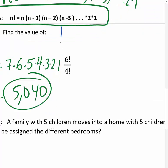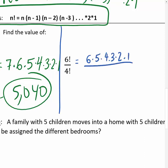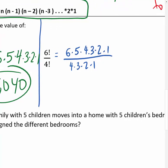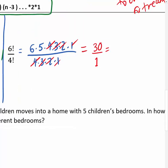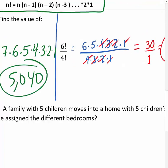Let's try dividing two factorials. 6 factorial over 4 factorial: that's (6 × 5 × 4 × 3 × 2 × 1) divided by (4 × 3 × 2 × 1). The 4s, 3s, 2s, and 1s all cancel out, so you're just left with 6 × 5 on top and 1 on the bottom. Since this isn't a probability, we reduce to a whole number: the answer is 30.